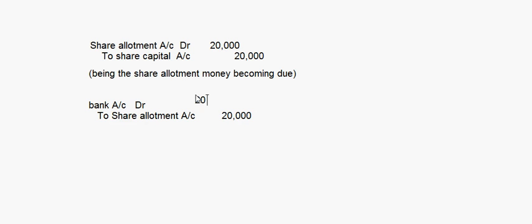After the allotment money becomes due, the shareholders pay that installment. On receipt of the share allotment money, the entry is: Bank Account debit to Share Allotment Account — ₹20,000. The whole allotment money of ₹20,000 is received. This is on receipt of allotment money.